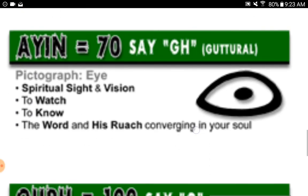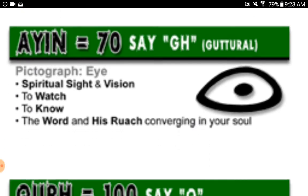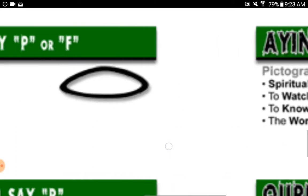Ayin equals seventy, say 'G' (guttural). Pictograph: eye. Spiritual sight and vision. To watch, to know — the word and his Ruach, breath, converging in your soul.